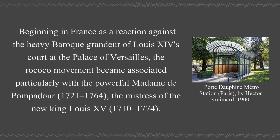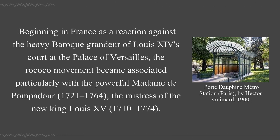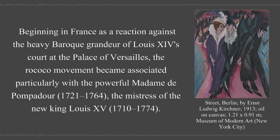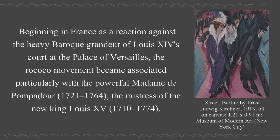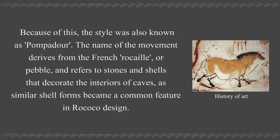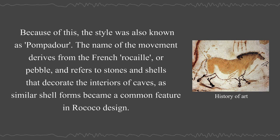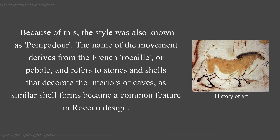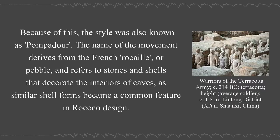Beginning in France as a reaction against the heavy Baroque grandeur of Louis XIV's court at the Palace of Versailles, the Rococo movement became associated particularly with the powerful Madame de Pompadour, 1721–1764, the mistress of King Louis XV. Because of this the style was also known as Pompadour. The name of the movement derives from the French rocaille, or pebble, and refers to stones and shells that decorate the interiors of caves, as similar shell forms became a common feature in Rococo design.